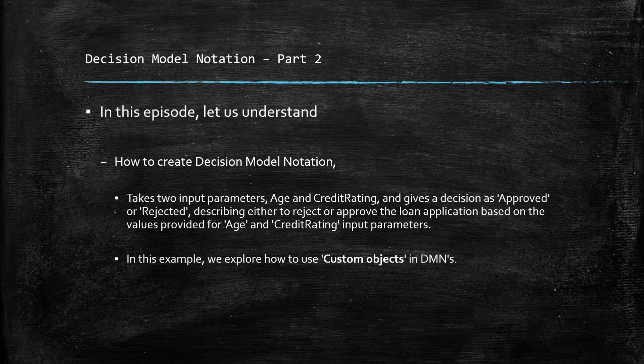We will create an example Decision Model Notation that takes two input parameters, age and credit rating, and gives a decision as either approved or rejected, describing either to reject or approve the loan application based on the values provided for age and credit rating input parameters.